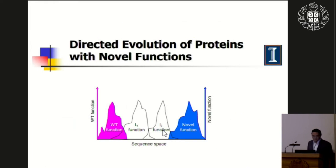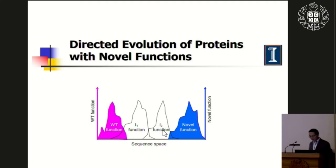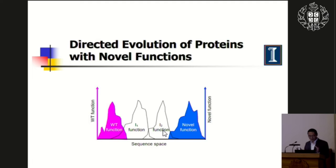Today I want to highlight two examples. One is related to protein engineering and the other to microbial cell factory engineering. Both rely on the directed evolution method.